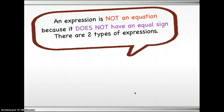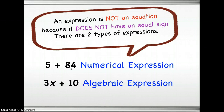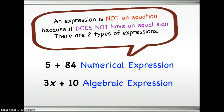There are two types of expressions. The first type is called numerical expression because it only contains numbers or constants and the operation symbol. The second one is called algebraic expression because it contains a variable. So an example here: 3 times x, or 3x, plus 10 — this is an example of an algebraic expression.